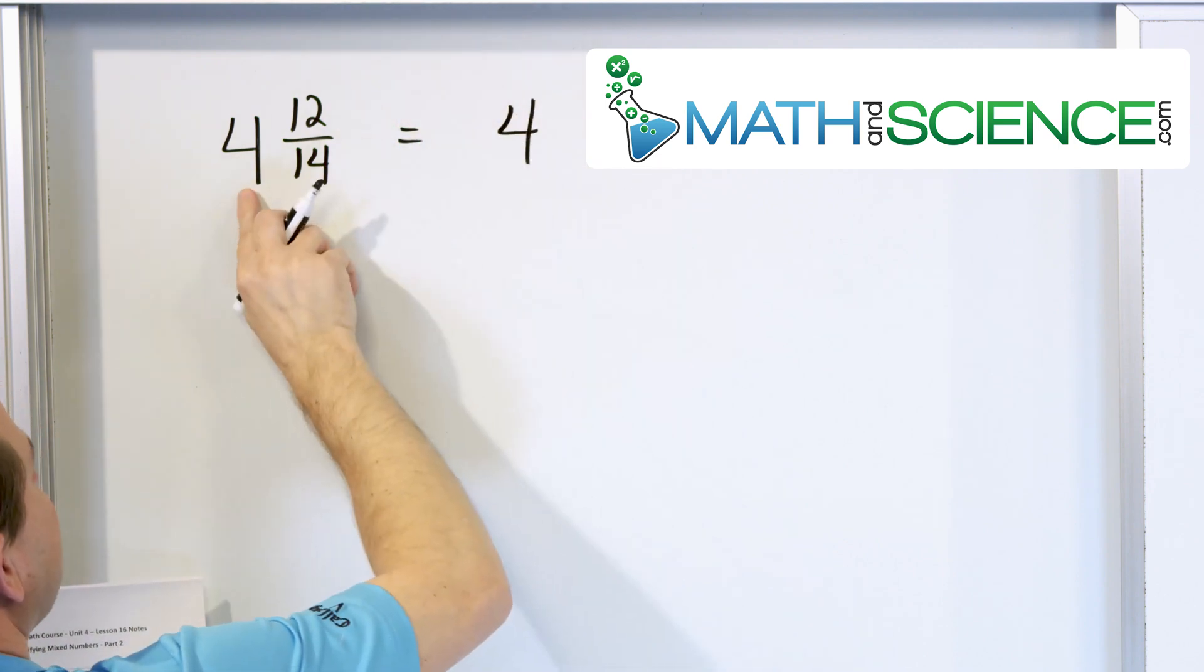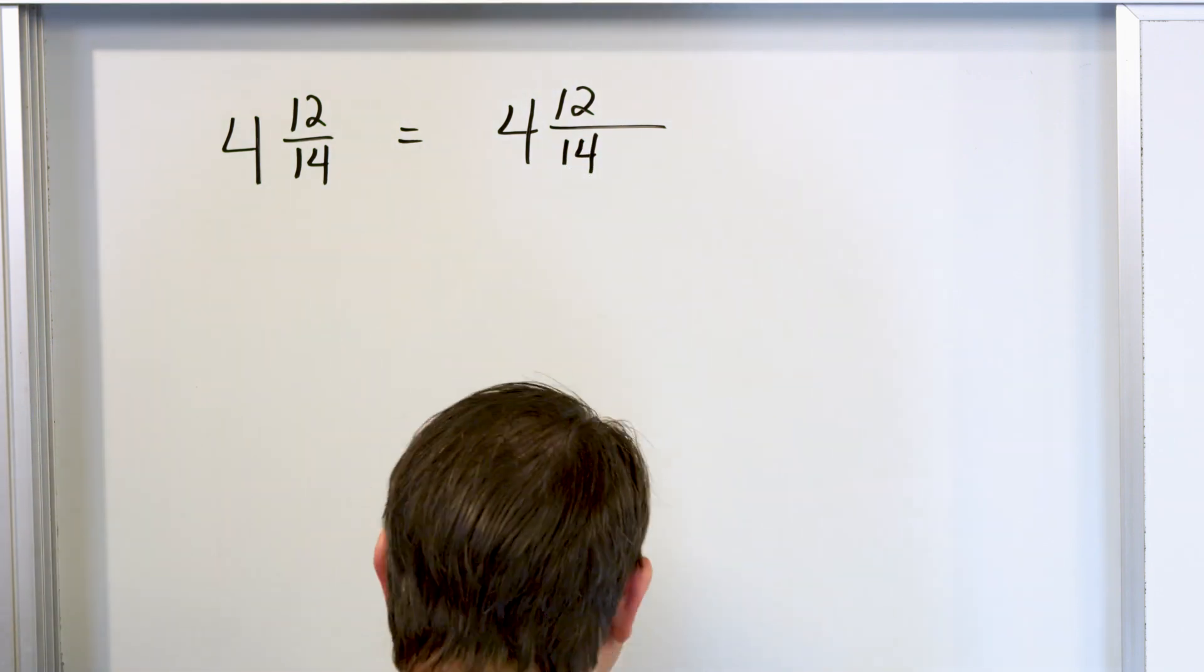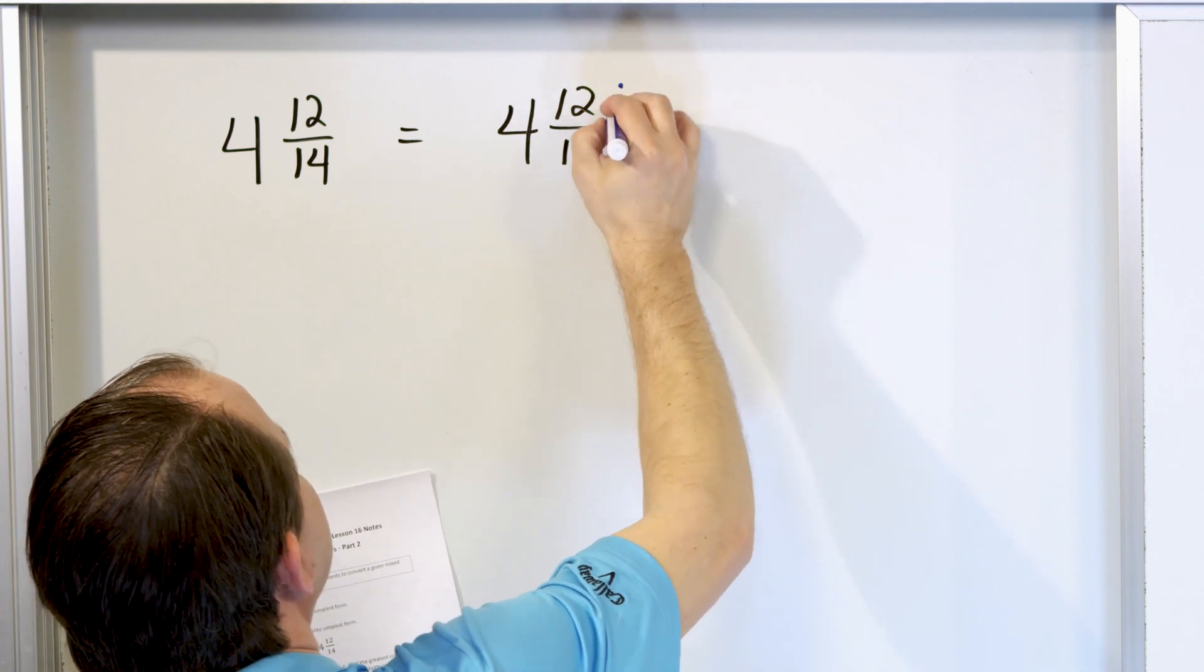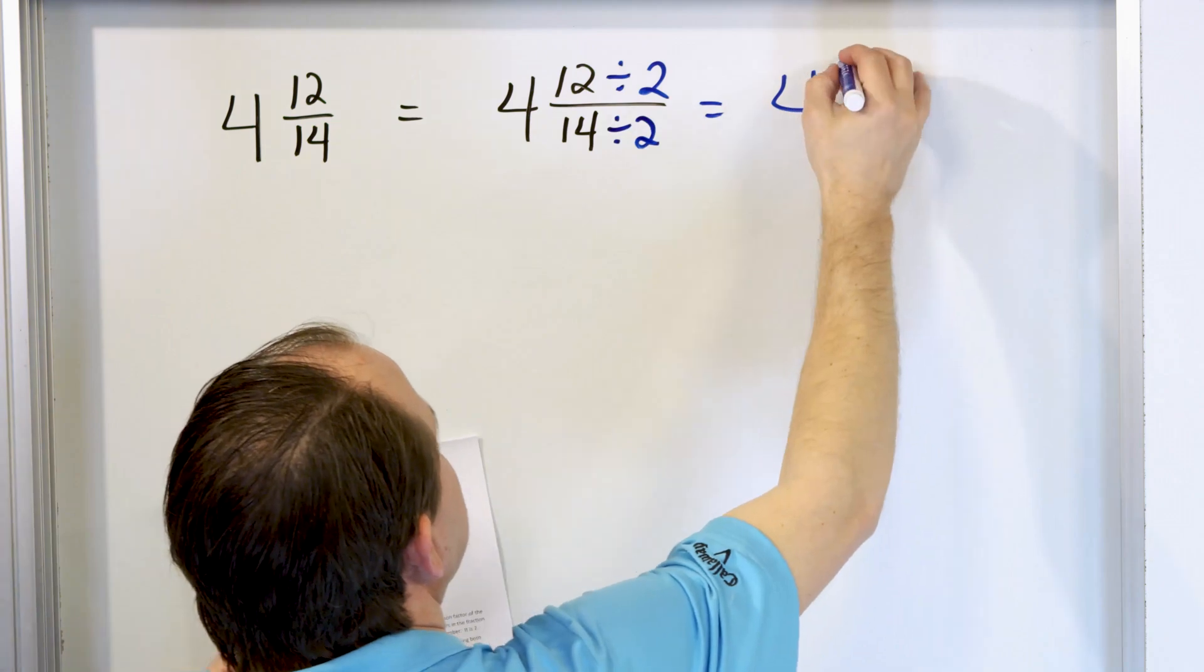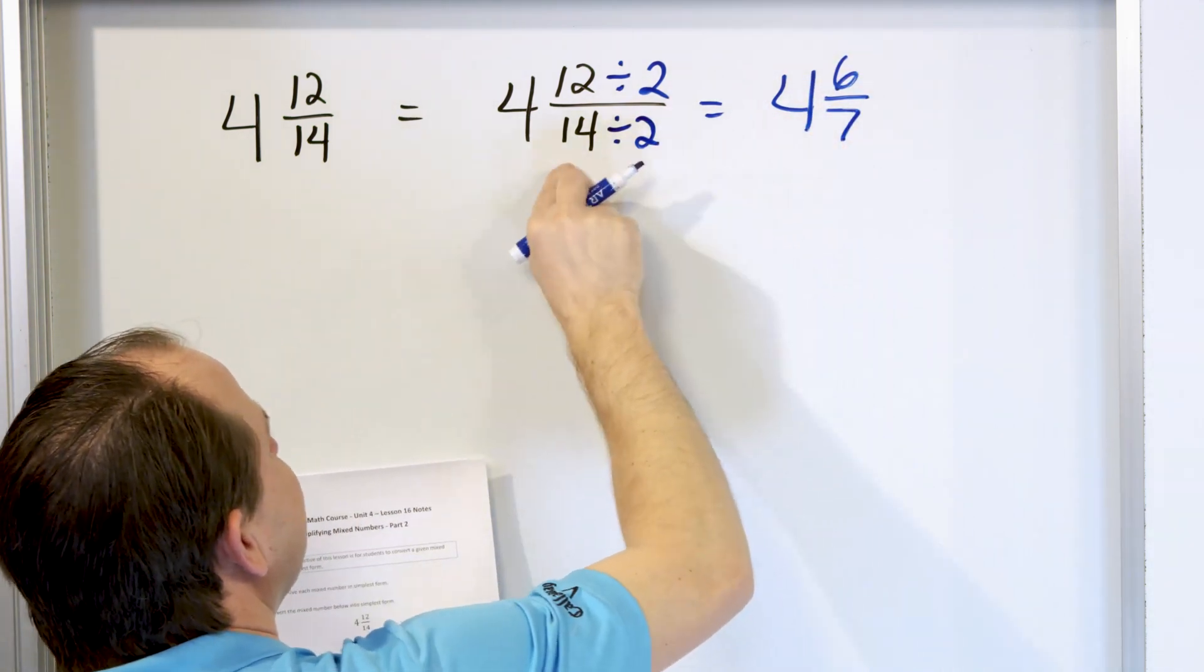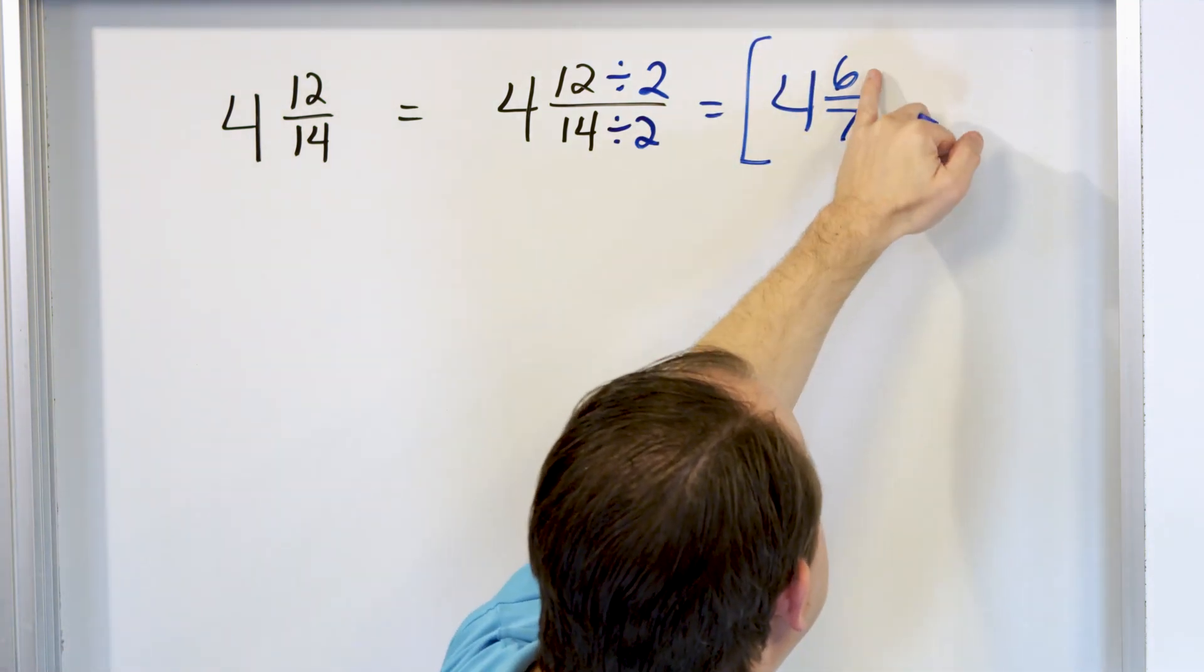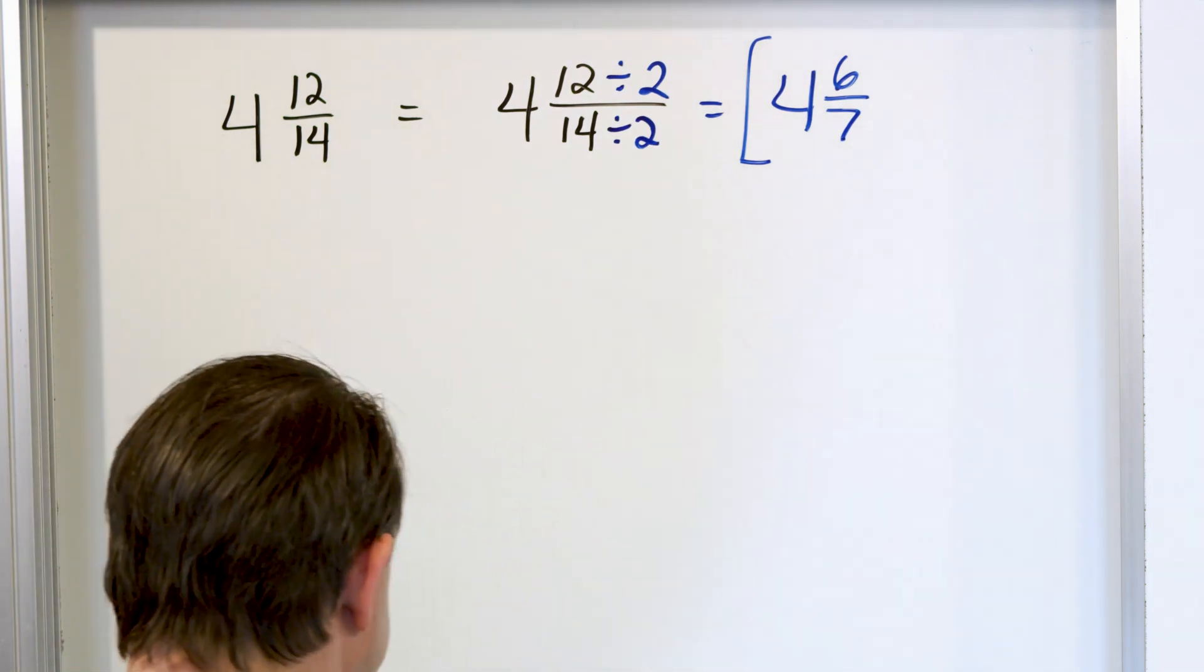The 4 comes along for the ride. The 12 and the 14, we're going to divide the top and bottom by 2 because they're both even numbers. 4 is still here, 12 divided by 2 is 6, and 14 divided by 2 is 7. This is the final answer because 6 and 7 I cannot divide any further, so 4 and 6/7ths.